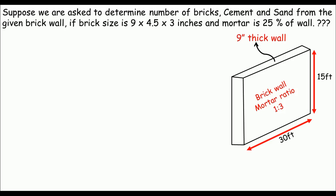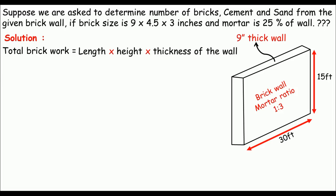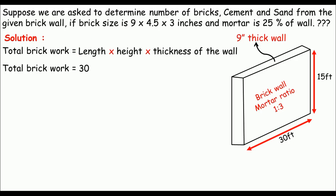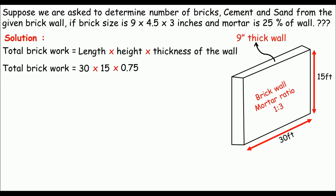The data is just enough to determine the number of bricks, cement, and sand. Coming directly to the solution, my first approach is to calculate the total brickwork, which is just the volume of the wall. Volume equals length × breadth × height. So total brickwork = 3 feet × 15 feet × 0.75 feet (9 inches), giving us 337.5 cft.